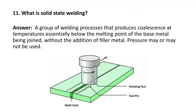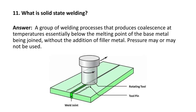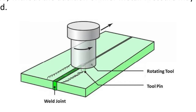Next question: what is solid state welding? It is a group of welding processes that produces coalescence at temperatures essentially below the melting point of the base metal being joined, without the addition of filler metal. Pressure may or may not be used. An example is friction stir welding, where material is heated but kept below the melting point and then joined together.